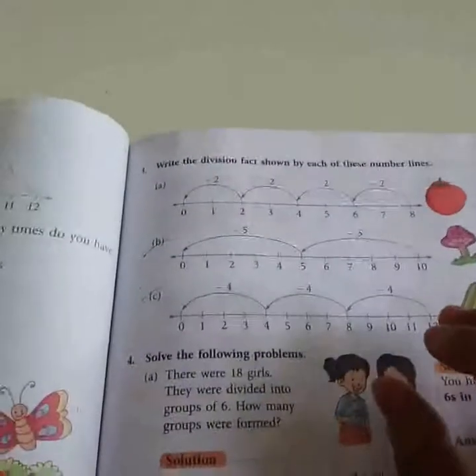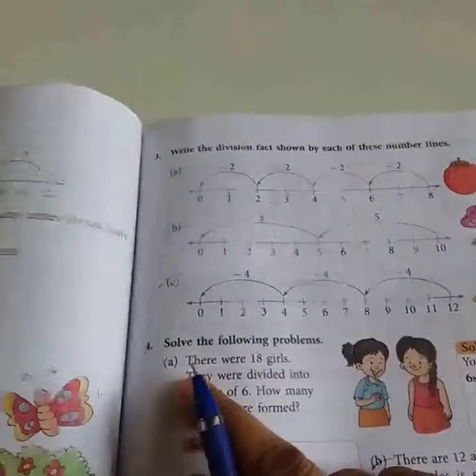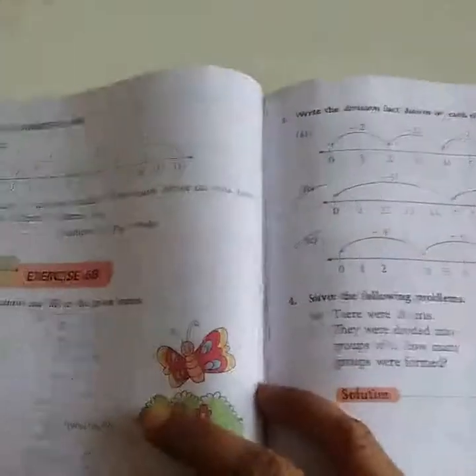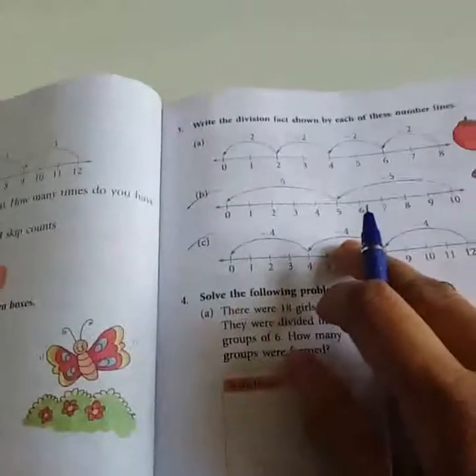That's it for today. Next question number 4 we will do in the next class. Here you have to complete 6A and 6B in book only. Thank you.